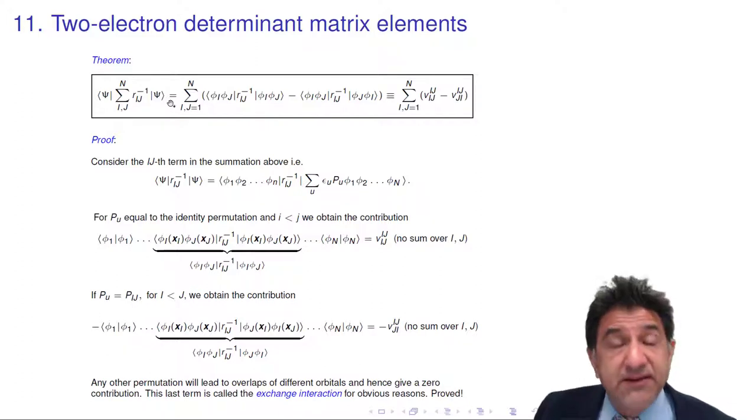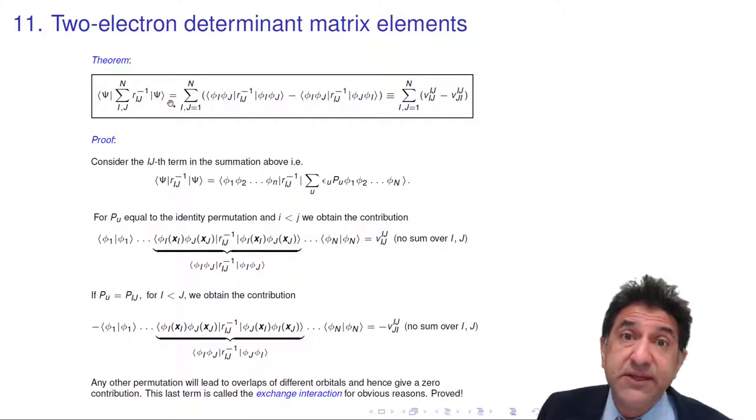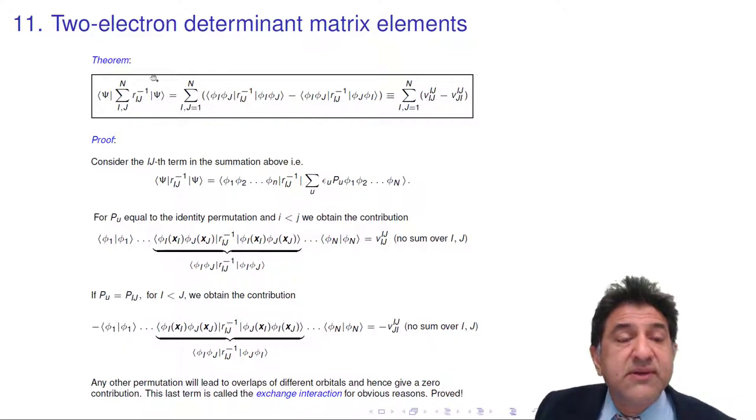So two electron operators only have matrix elements between determinants which are different by at most two orbitals. If they differ by more, we would get zero. And this is a general result. If we had a three electron operator, we don't. If there was a term in the Hamiltonian involving three electrons at once, that would connect determinants. It would have a non-zero value between determinants which have three different orbitals, but not between four different orbitals. So you see the pattern here. Luckily we don't have to worry about three electron operators.